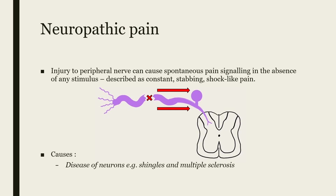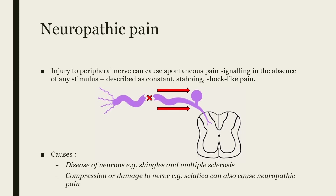There are a variety of causes of neuropathic pain. Disease of the neuron, such as shingles or multiple sclerosis, could be to blame. Or direct damage to the nerve, such as compression or cutting — for example, in sciatica — may also cause neuropathic pain to occur.